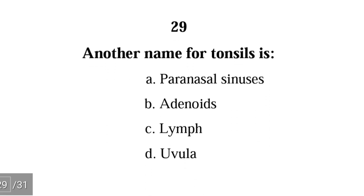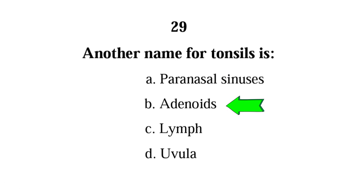Number 29. Another name for tonsils is: A. paranasal sinuses, B. adenoids, C. lymph, D. uvula. The correct answer is B, adenoids. Adenoids are the common name for tonsils.